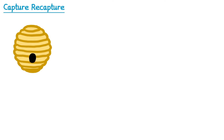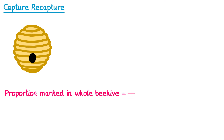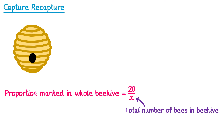Right now we don't know how many bees are in the hive, but we do know that 20 of them are marked. So if we write down the proportion of bees in the beehive that were marked, the proportion marked in the whole beehive is 20 out of the total number of bees. We don't know that total — that's what we're trying to work out — so we're going to call it x, which represents the total number of bees in the beehive.